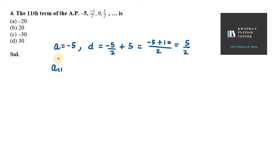Now we need to find a₁₁. a₁₁ will be a + (11-1)d. So a in this case is -5, plus 11 minus 1 is 10, and d in this case is 5/2.